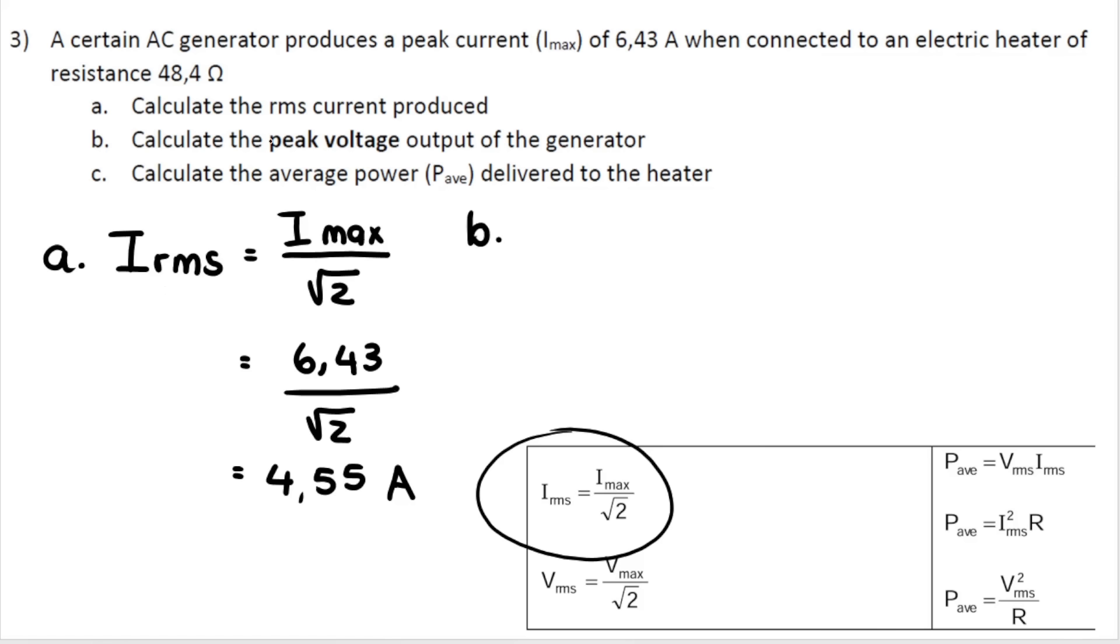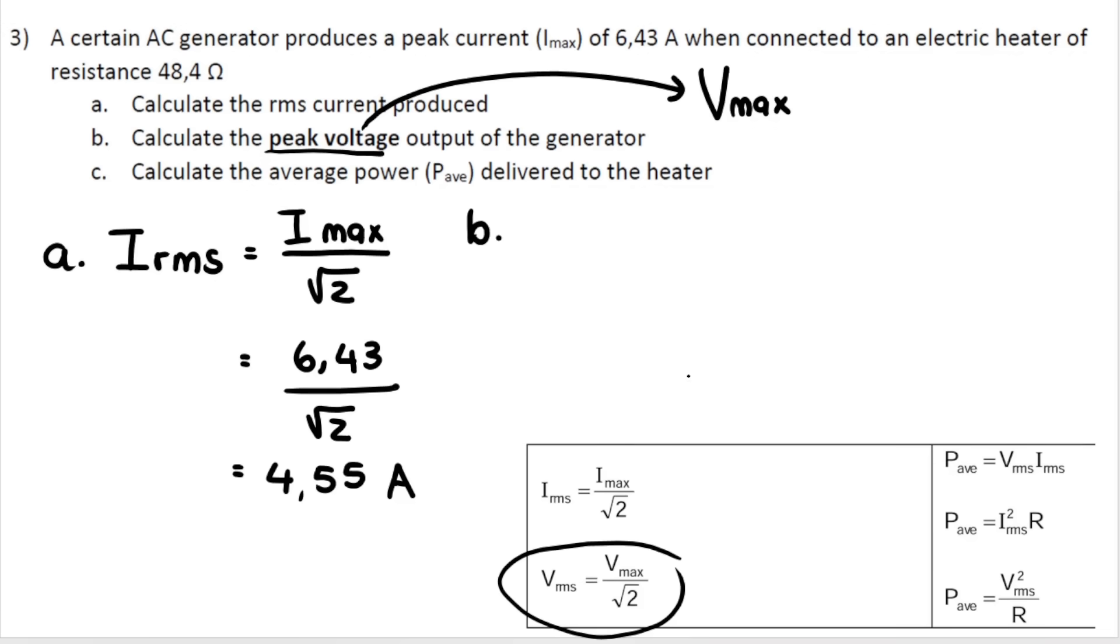Next question, calculate the peak voltage output of the generator. Now, when reading that question, peak voltage, you need to know, okay, peak voltage is V max. You see how they don't say V max? You need to know that. Now, your first thought might be like, okay, cool. I'm going to use this formula. And then you write it down and you get ready. And then you think, oh no, I can't use this formula. Why not? Yes, I'm looking for V max. That's fine. But do I have V RMS? No, I don't. So you're going to have to use a different formula. You might think, okay, I can maybe use one of these formulae because this, well, maybe not the first one. Well, it depends. Peak voltage. Maybe I can calculate RMS and then I can work out resistance. Think about the one that is not on the formula sheet. It's going to be the easiest one to use.